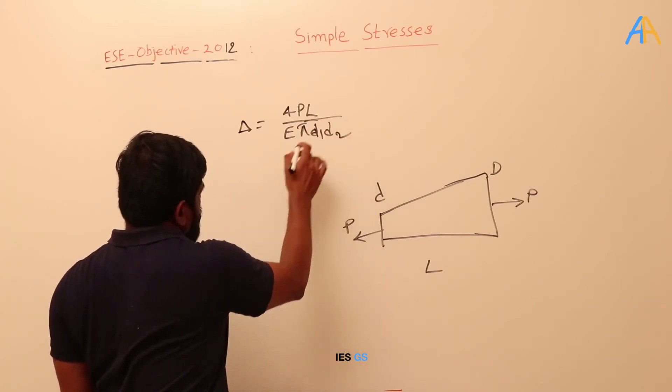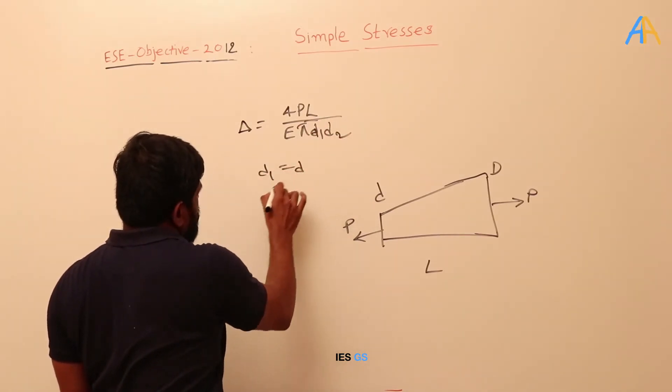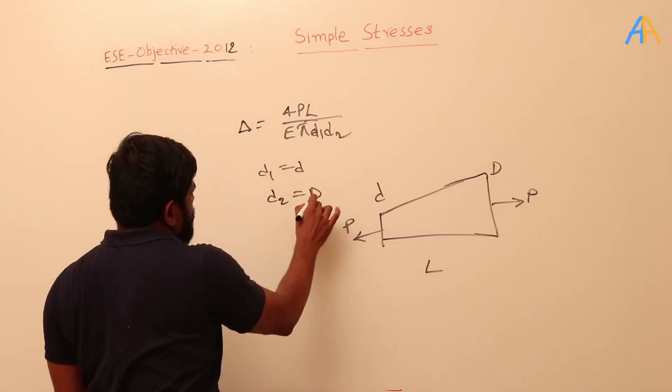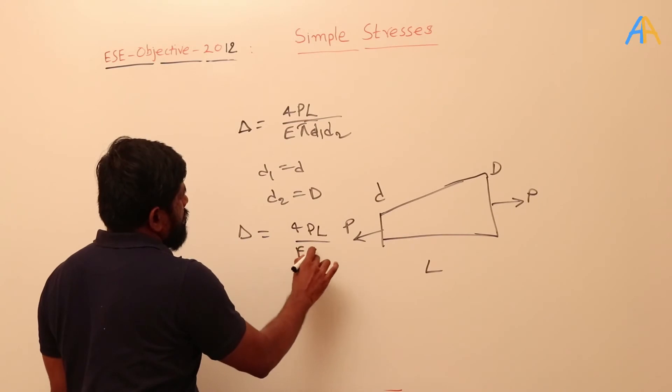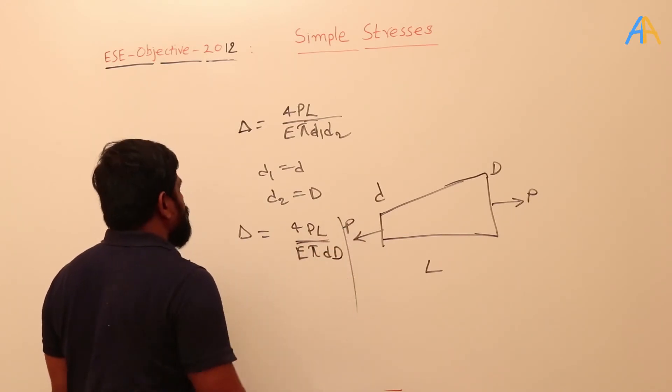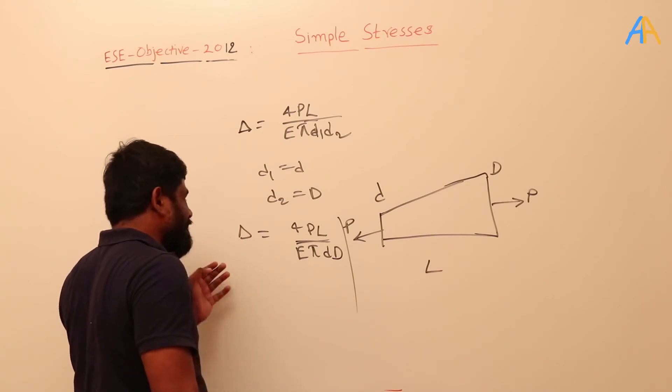Okay, so here D1 is nothing but d, D2 is nothing but capital D. So if I substitute these values then 4PL divided by E pi small d capital D. Okay, so you need to buy this.